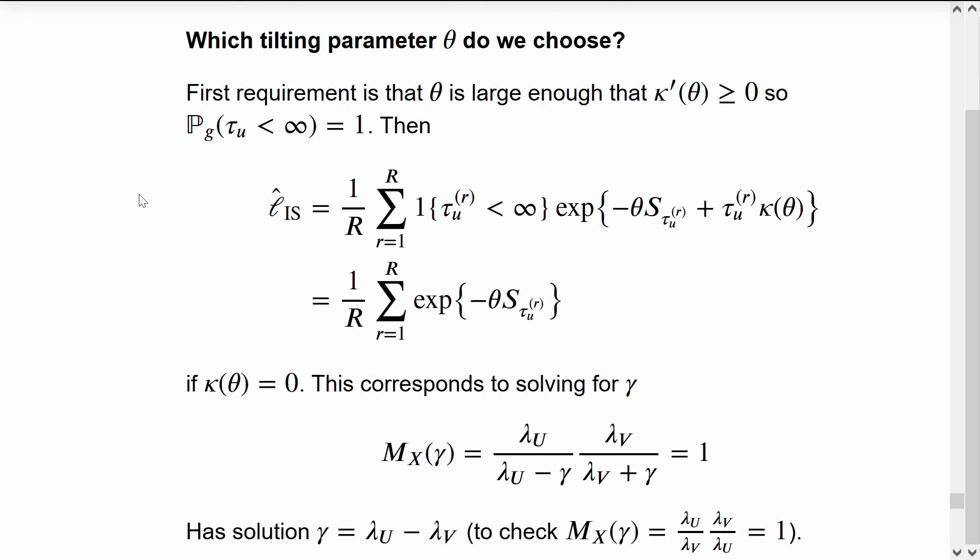We haven't actually decided yet which specific proposal distribution we're going to use because we haven't chosen what the tilting parameter should be. If we tilt in such a way that the cumulant generating function has a derivative which is positive at theta, then this will allow us to ensure that the ruin occurs with probability 1.